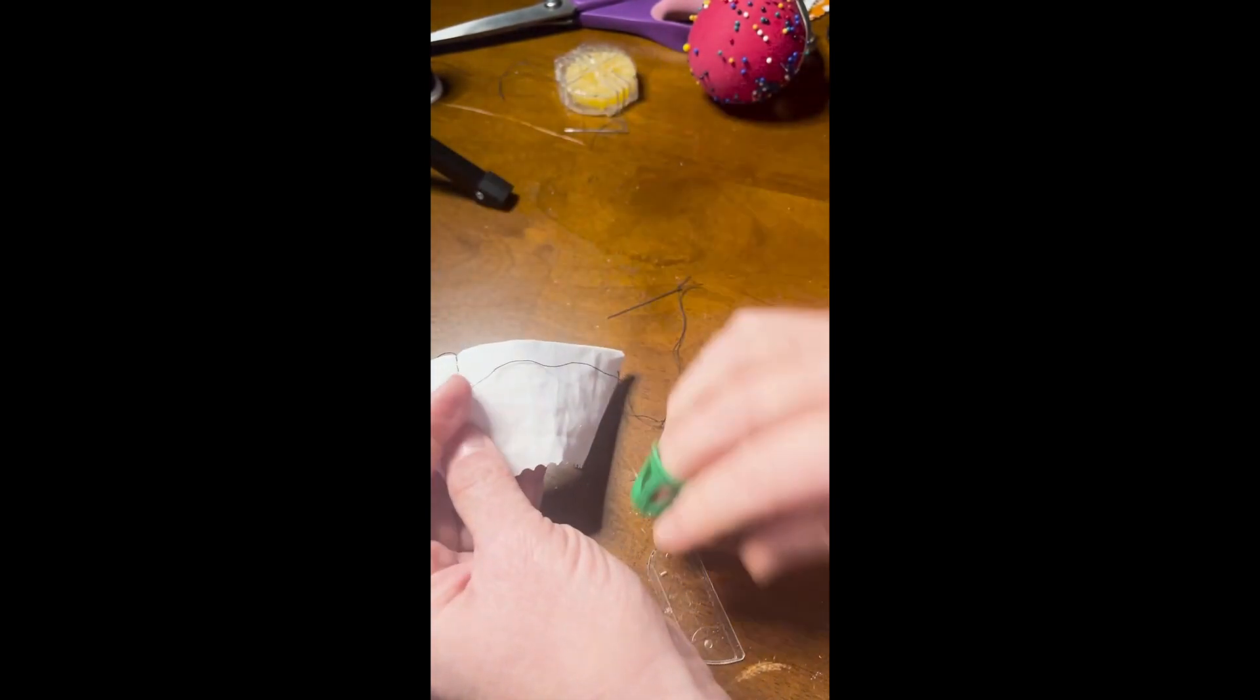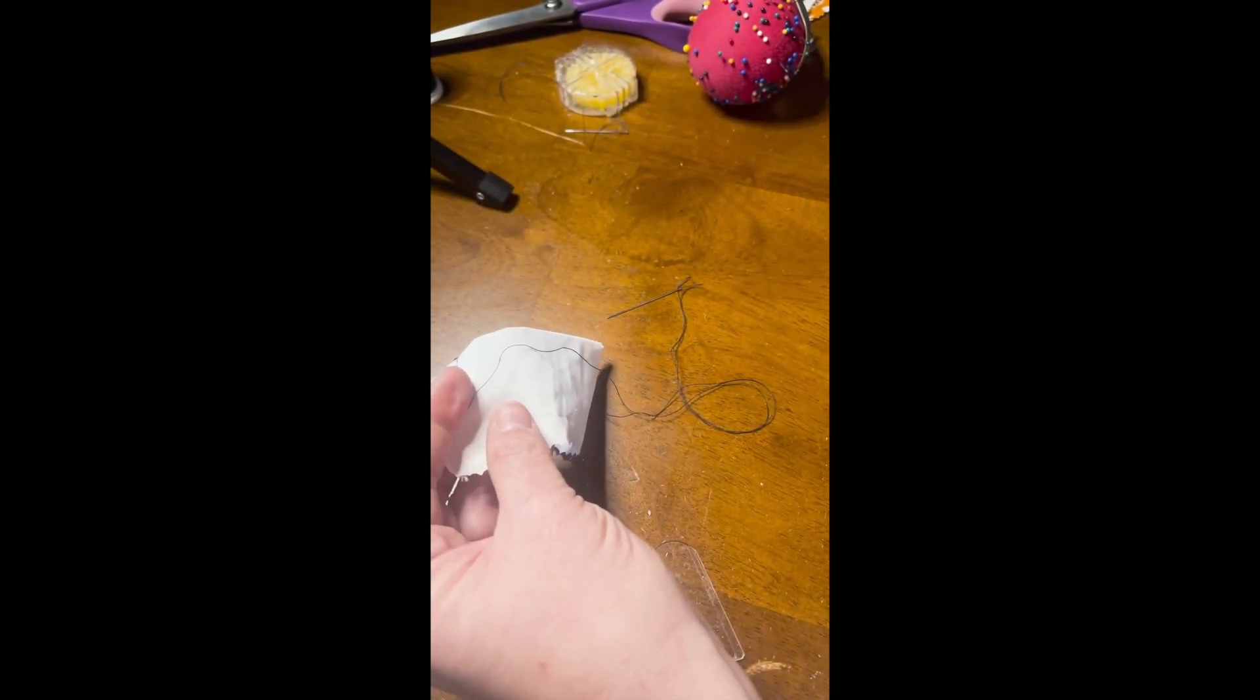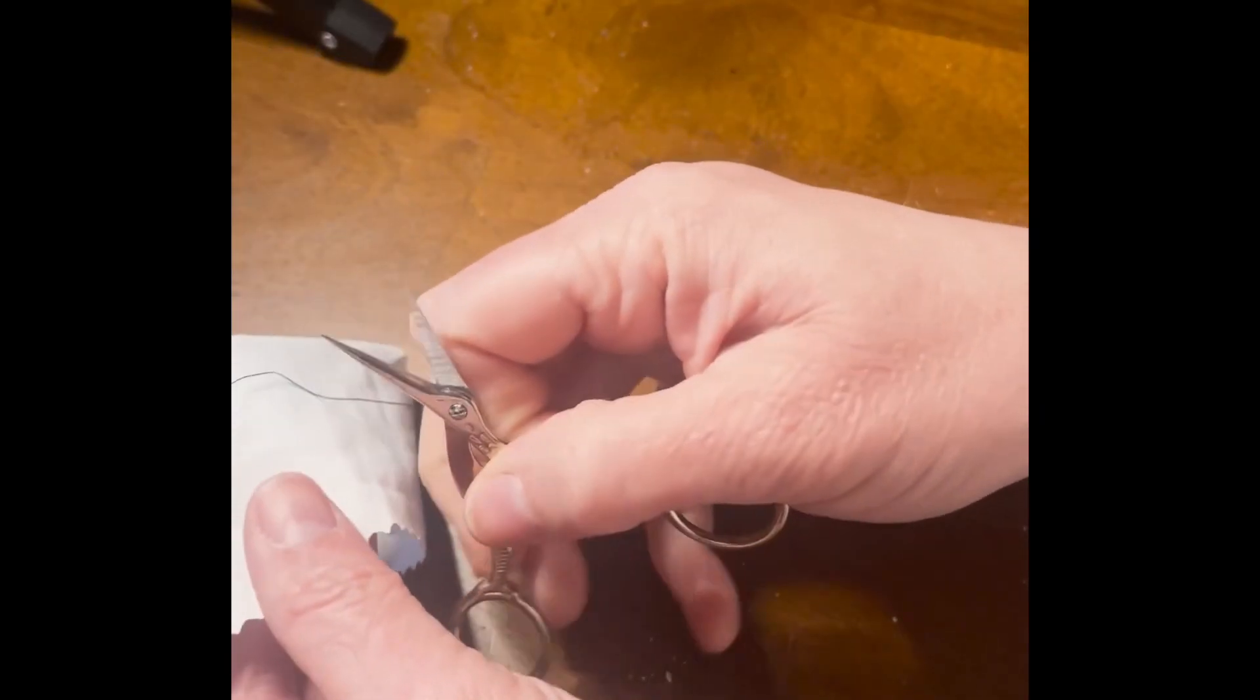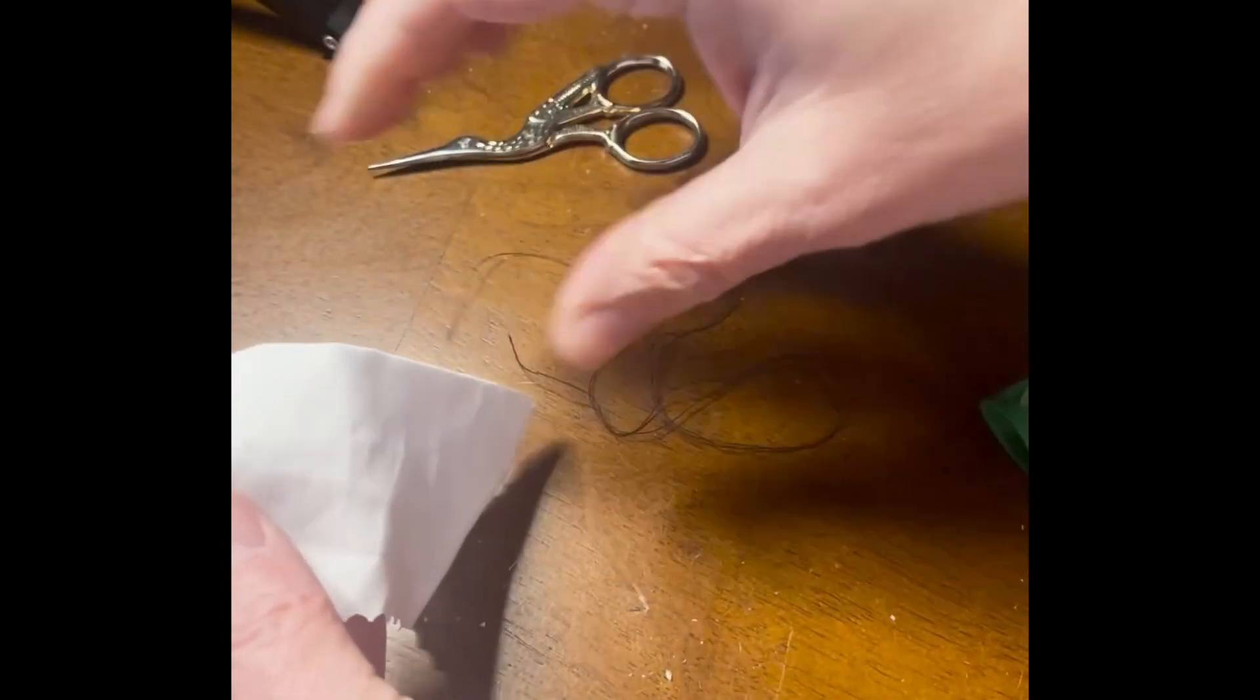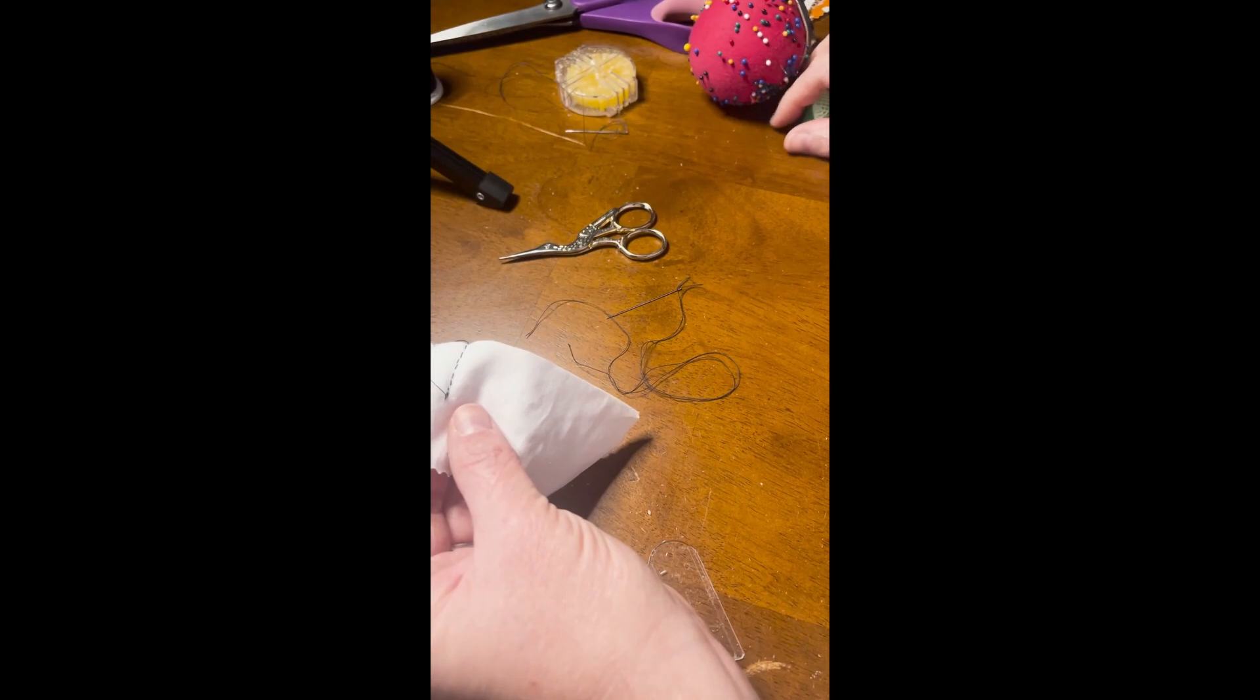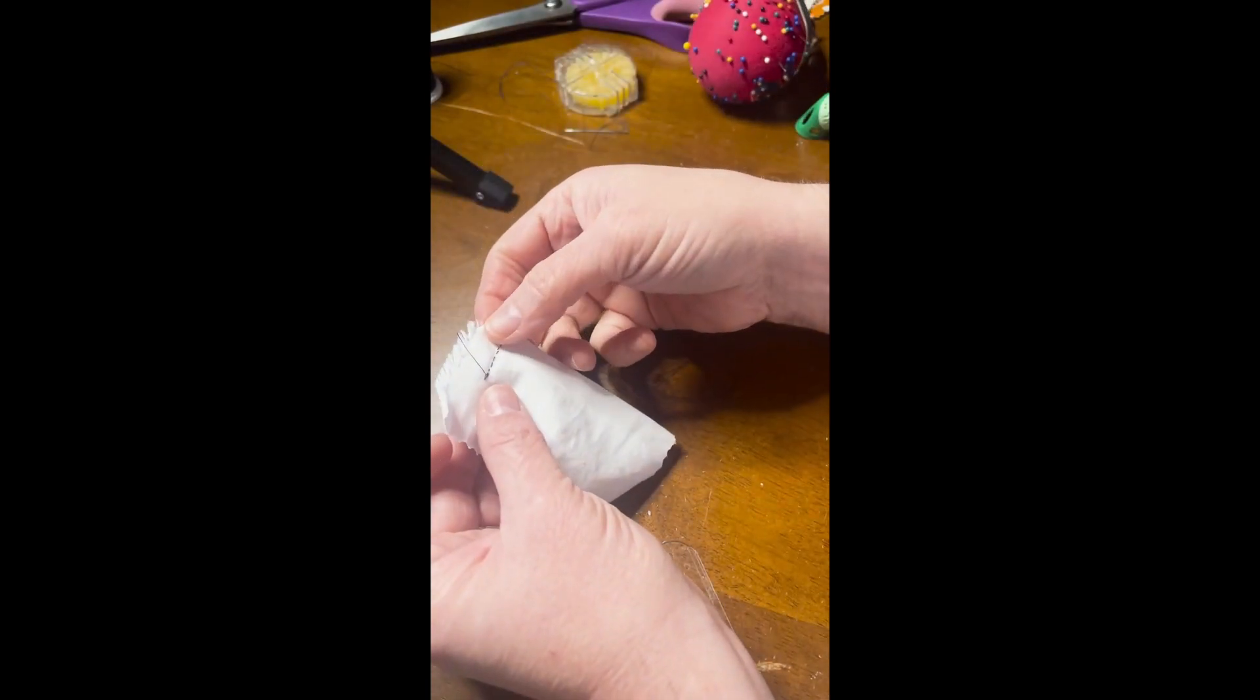And then clip your thread about an inch away from your fabric and leave a tail. And then you would start your next row of stitches right next to it and continue on until you finish your stitches.